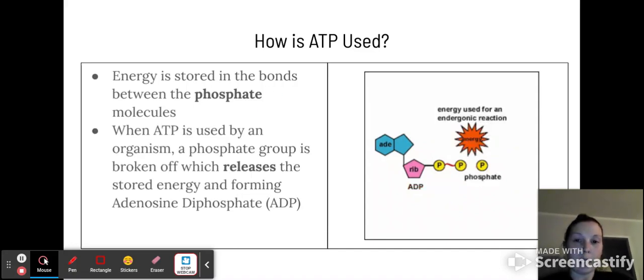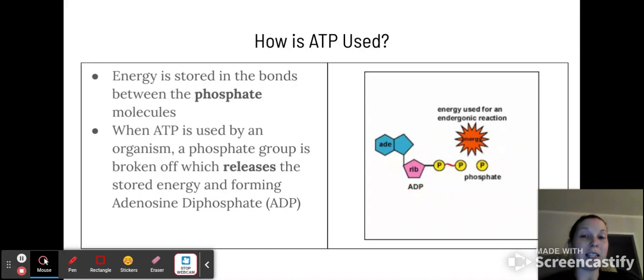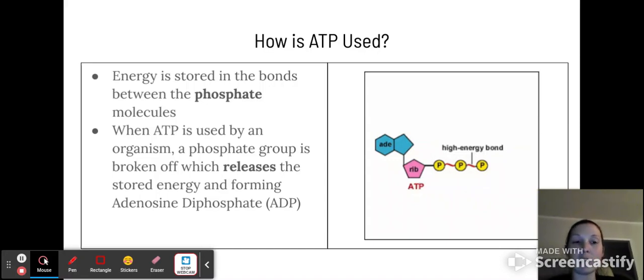So you can see that in this GIF over here. And when ATP is used by an organism, the phosphate group is broken off, which releases the stored energy. And what's left over is now a newly released phosphate group, as well as an adenosine diphosphate. So diphosphate means two.